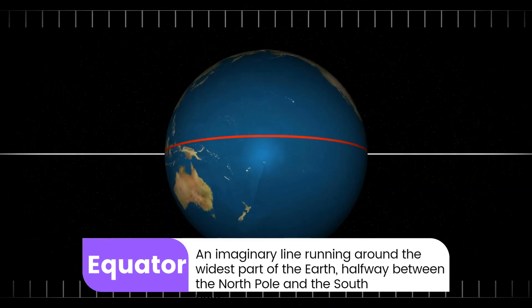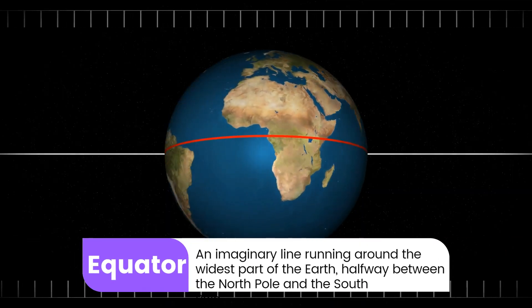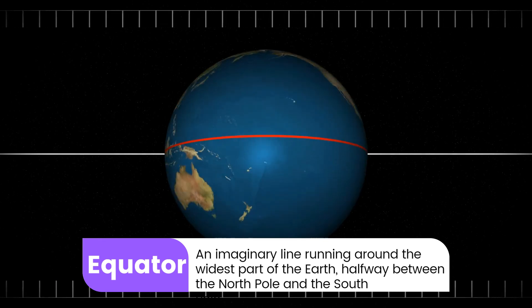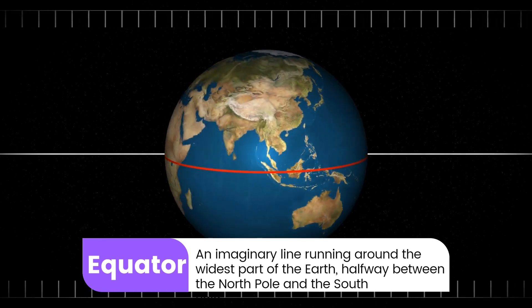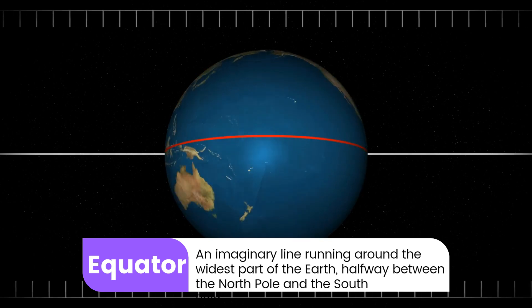8. Equator: An imaginary line running around the widest part of the Earth, halfway between the North Pole and the South Pole.